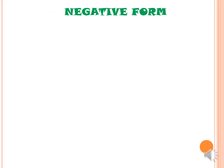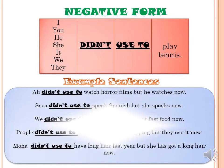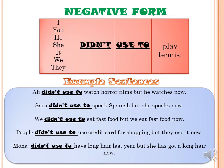Now the negative form. The structure of the negative form: start the sentence with a subject — I, you, he, she, it, we, or they — followed by 'didn't', then 'used to', then the verb and object. For example: I didn't used to play tennis. We use 'didn't' followed by 'use to' to make the negative form.